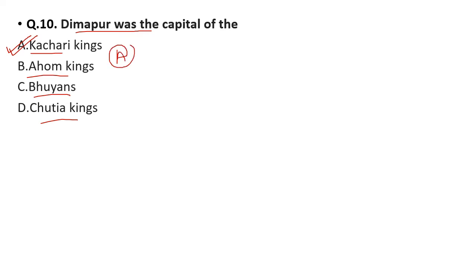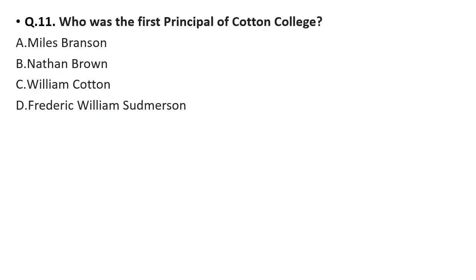Question 11: Who was the first principal of Cotton College? Option A: Myles Brunson, option B: Nathan Brown, option C: William Cotton, option D: Frederick William Sudmerson. The correct answer is option D, Frederick William Sudmerson.